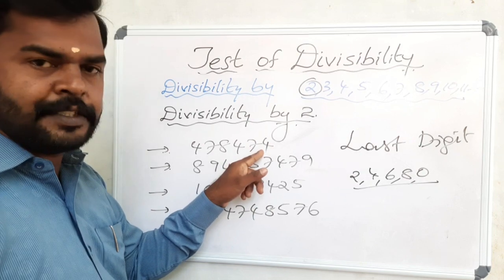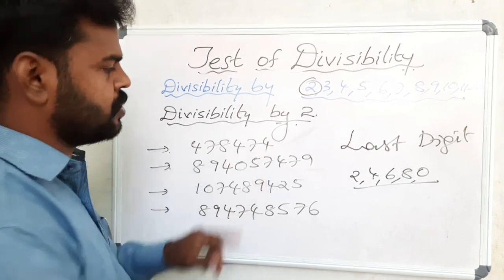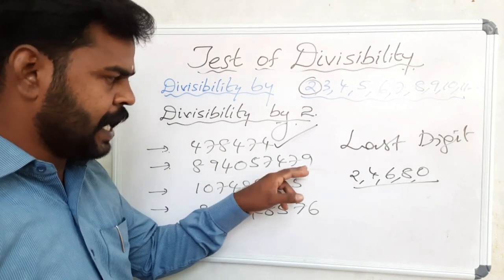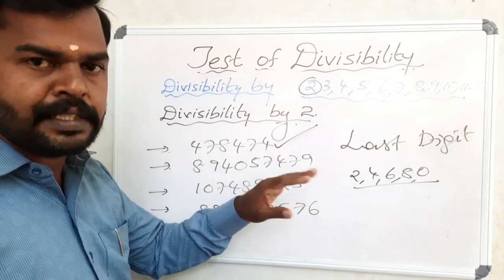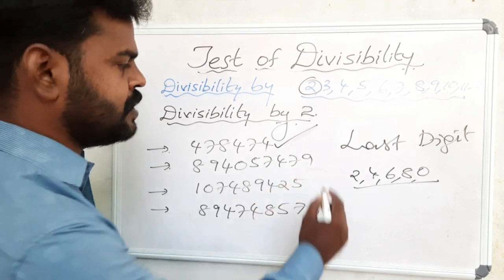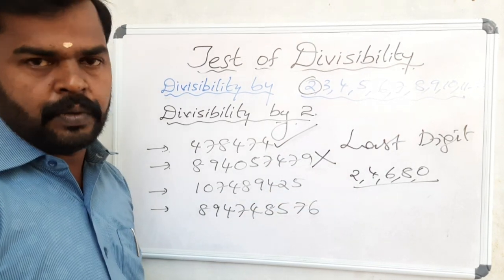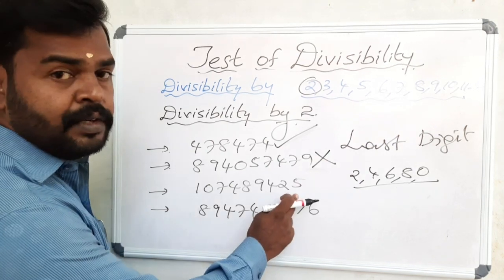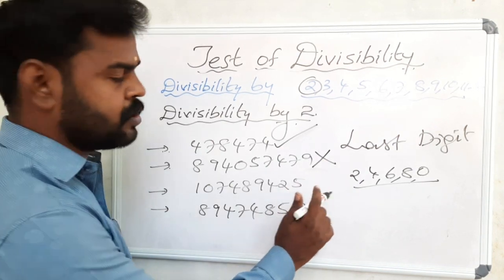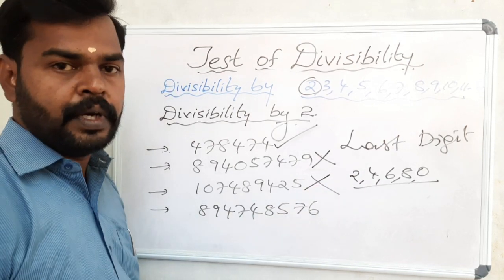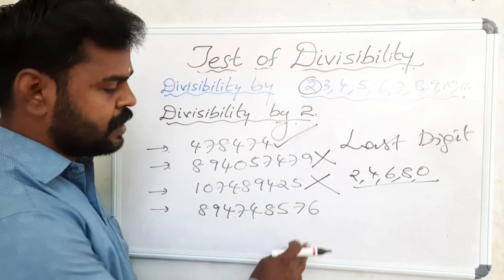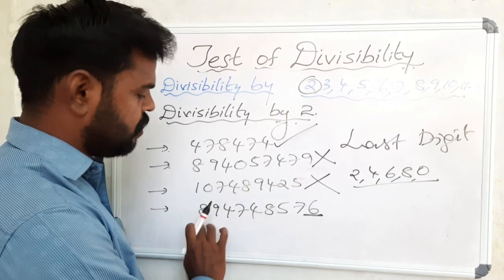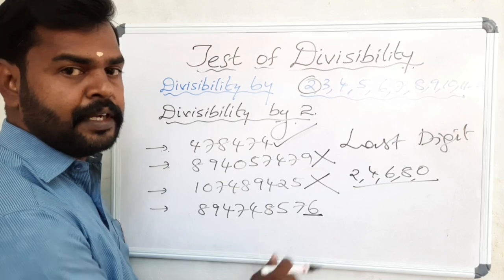See here: the last digit is 4, which is even, so this whole number is divisible by 2. Next number: last digit is 9, which is not even, so this number is not divisible by 2. Next: last digit is 5, not even, so not divisible by 2. Last number: last digit is 6, which is even, so this whole number is divisible by 2.